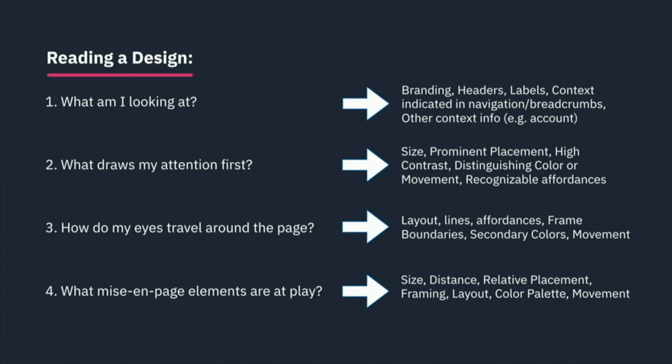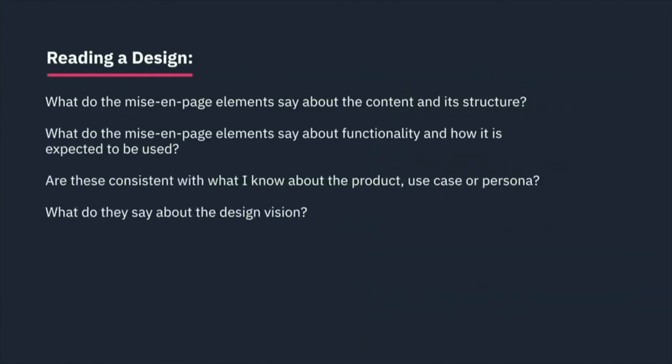And of course, there may be other aspects that are particularly important — is there something about distance, size, or movement that may not have been captured in the previous questions? Then you start interpreting backwards: what is this telling me about the content? What about the functionality? How is the user expected to use this? The layout alone can tell you a lot of things.